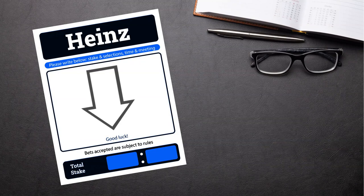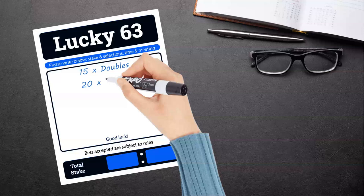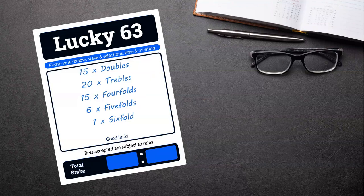A common alternative to a Heinz bet is a Lucky 63. As with the Heinz it includes 15 doubles, 20 trebles, 15 fourfolds, six fivefolds and a sixfold accumulator, but it also includes single bets on each of the six selections, making a total of 63 bets, hence the name of the bet, Lucky 63.